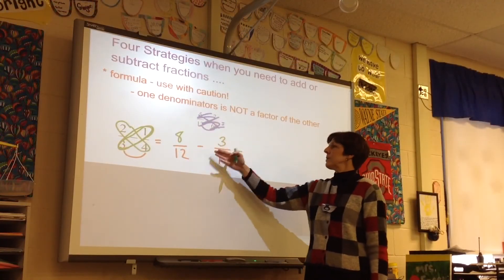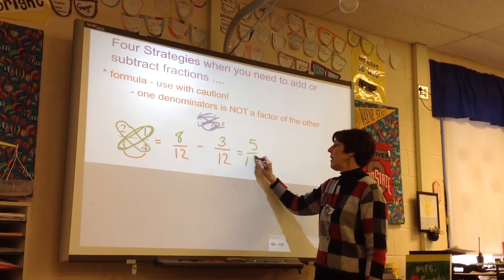So that gives us 8 twelfths minus 3 twelfths, 5 twelfths.